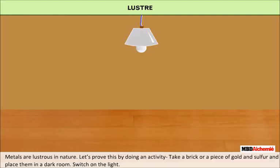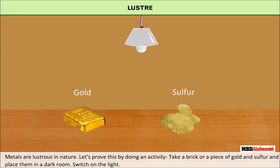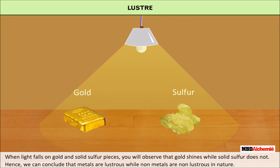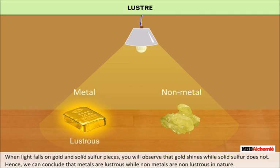Metals are lustrous in nature. Let's prove this by doing an activity. Take a piece of gold and sulfur and place them in a dark room. Switch on the light. When light falls on the gold and solid sulfur, you will observe that gold shines while solid sulfur does not. Hence, we can conclude that metals are lustrous in nature while non-metals are non-lustrous in nature.